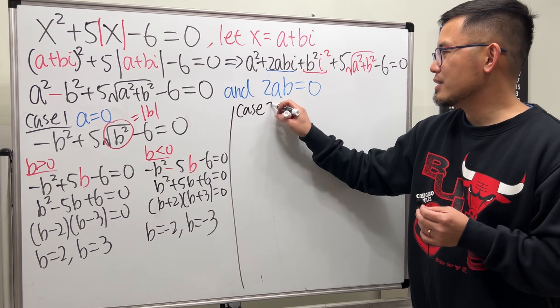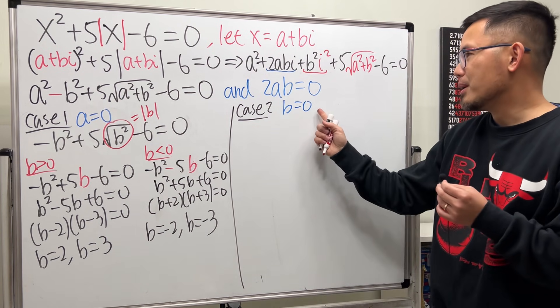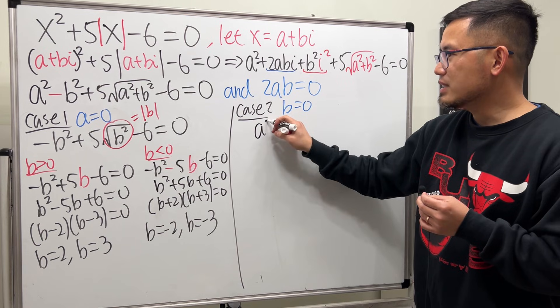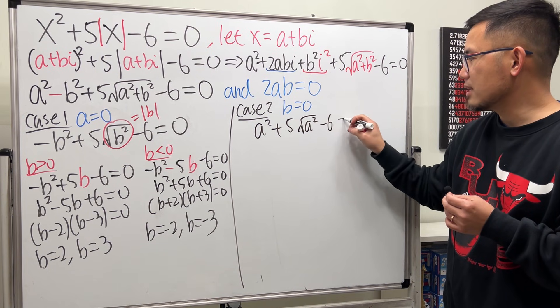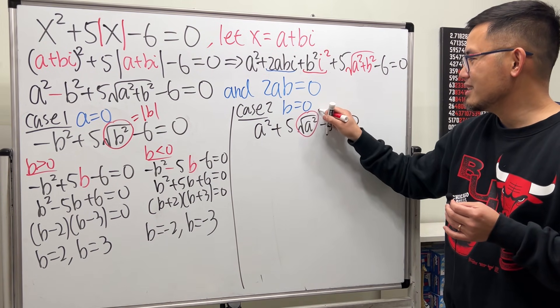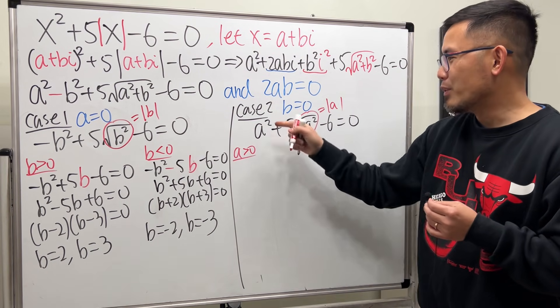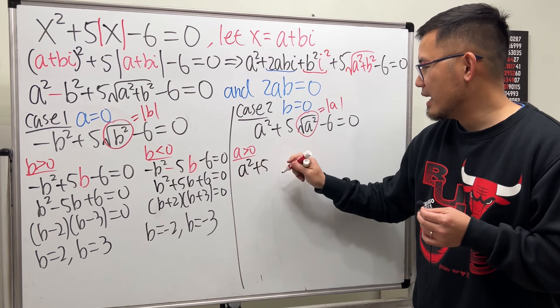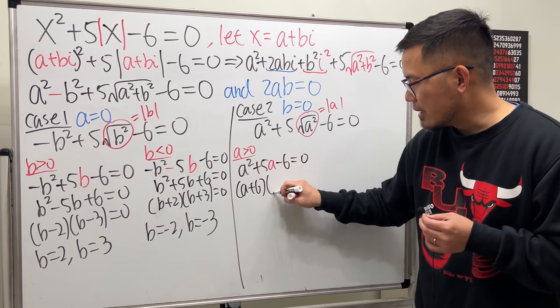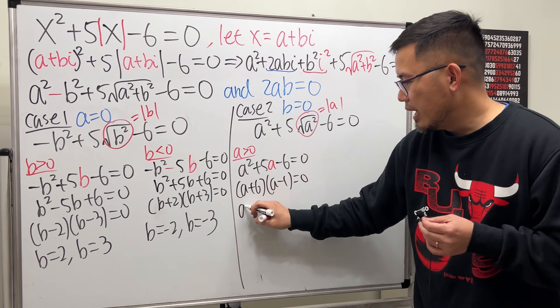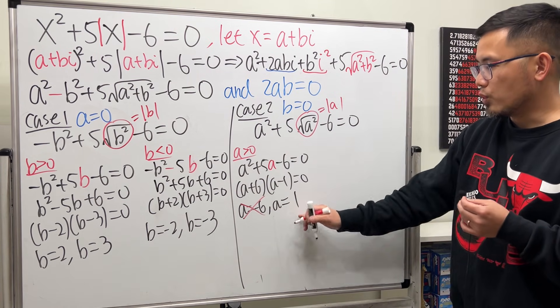case 2. And this is the case when b is equal to 0. Do the same thing. Put 0 into all the b's. We get a squared. And then we have plus 5 square root of a squared. And then minus 6. That's equal to 0. Again, a is real. So that means this is absolute value of a. More cases. When a is greater than 0, that will give us a squared plus 5a, and then minus 6 is equal to 0. Let's see. This is a plus 6 times a minus 1 equal to 0. So a will be negative 6 or positive 1. We don't want negative 6 because we want a to be positive. So 1 from here.